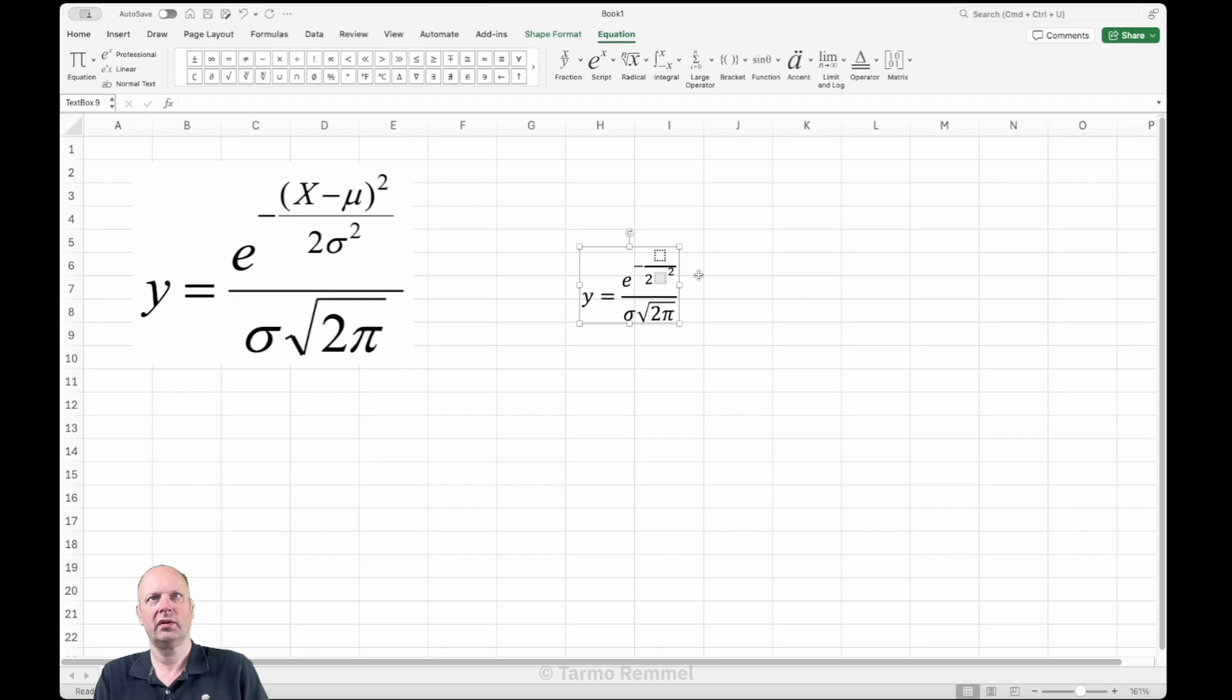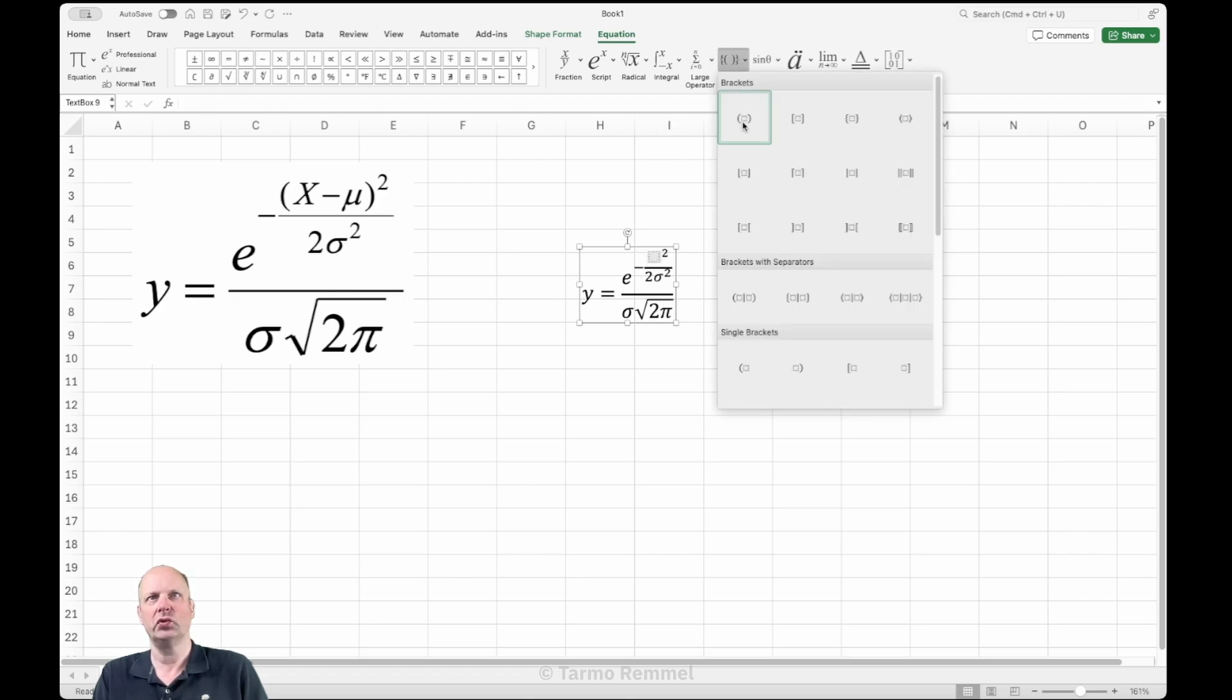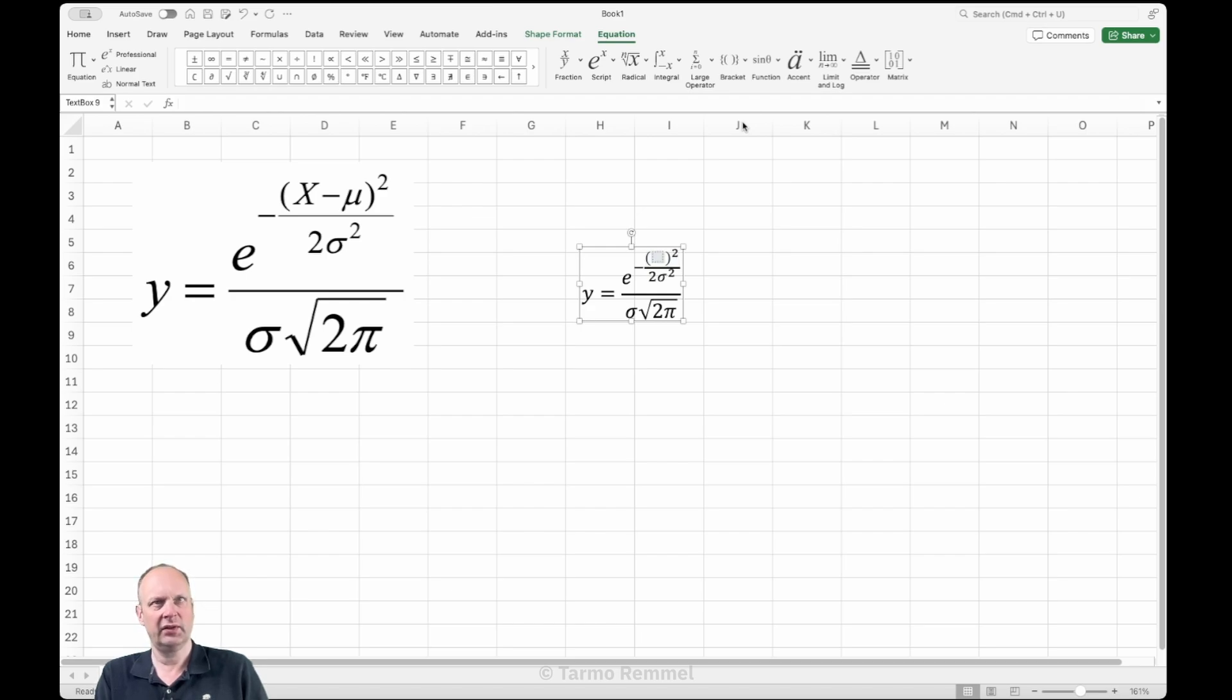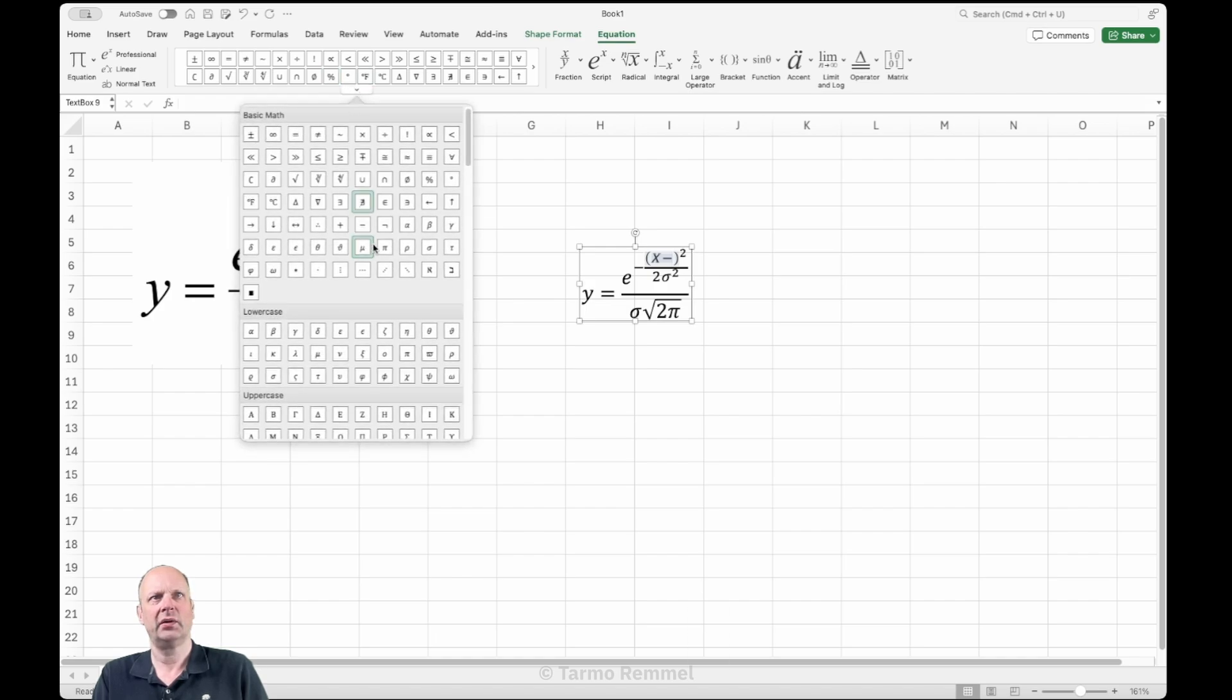And I can go and choose sigma there. Now in the numerator, I again have a component that's taken to an exponent, so I'm going to choose the exponent and go back and change the exponent to a 2. And highlight the remaining box, I'm going to choose the brackets and then type in x minus, and then find from the symbol pull-down list, I'm going to find mu.